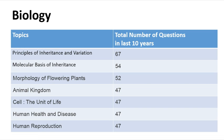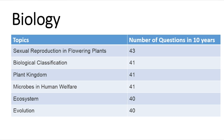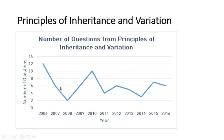Remember, this is the count over the past 10 years, not just one year. Human Reproduction and Sexual Reproduction in Flowering Plants have nearly 43 questions. Biological Classification has 41 questions, Microbes in Human Welfare nearly 41 questions, and Evolution has 40 questions over the last 10 years. This is the overall distribution of questions.